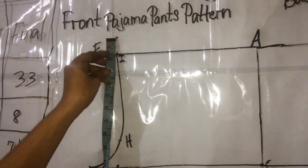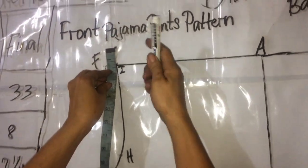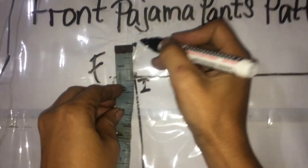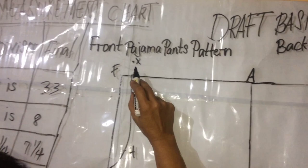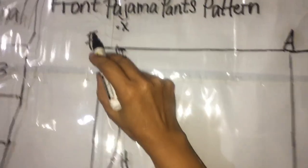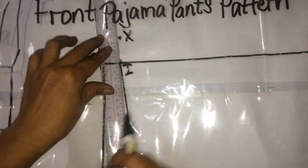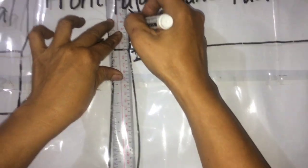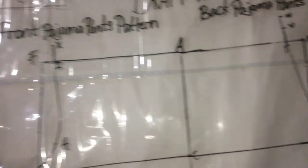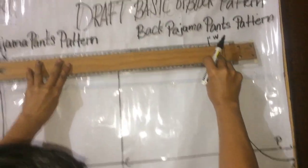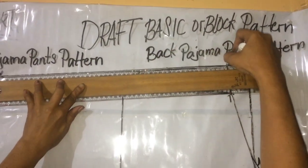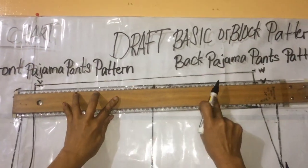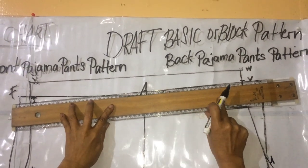From point I, measure one and one fourth. Mark X. Connect I to X using a ruler. X to W. I to V.